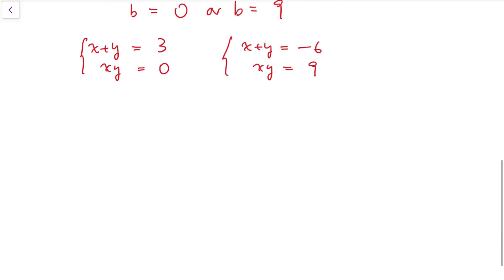For each system, I can say x and y are roots to different quadratic equations. For the first system, it would be z² - 3z = 0.